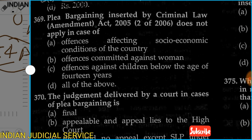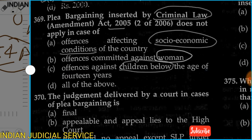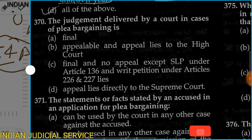Question 369: The plea of bargaining, inserted by the Criminal Law Amendment Act 2005, does not apply in the case of: Option A: offenses affecting the socio-economic condition of the country. Option B: offenses committed against women. Option C: offenses against children below the age of 14 years. Option D: All of the above. The answer is D — all of the above. Plea of bargaining does not apply to these three categories.